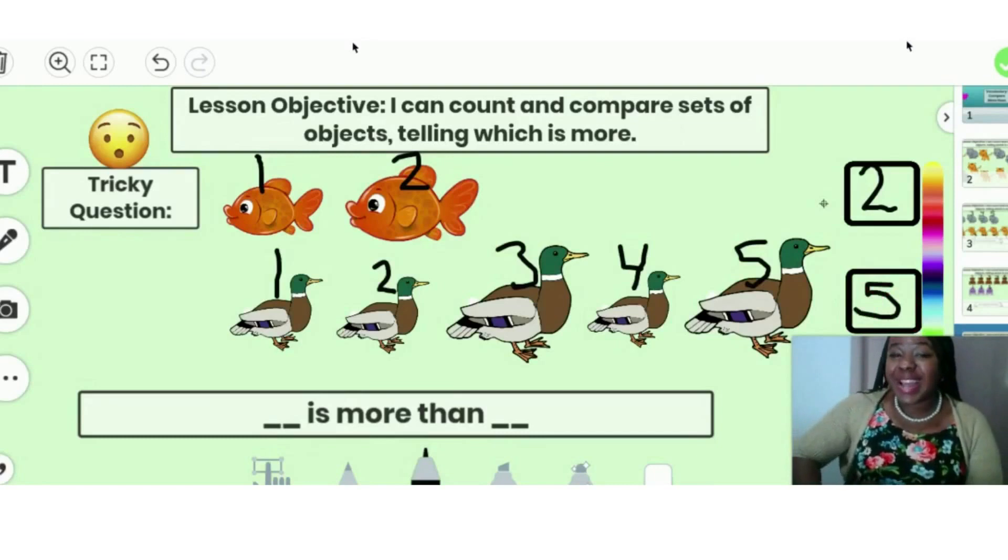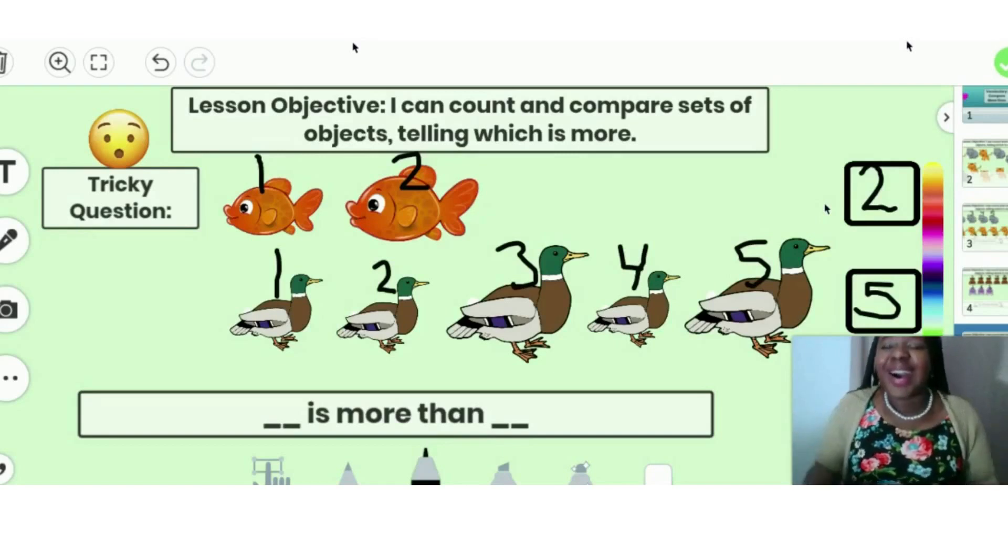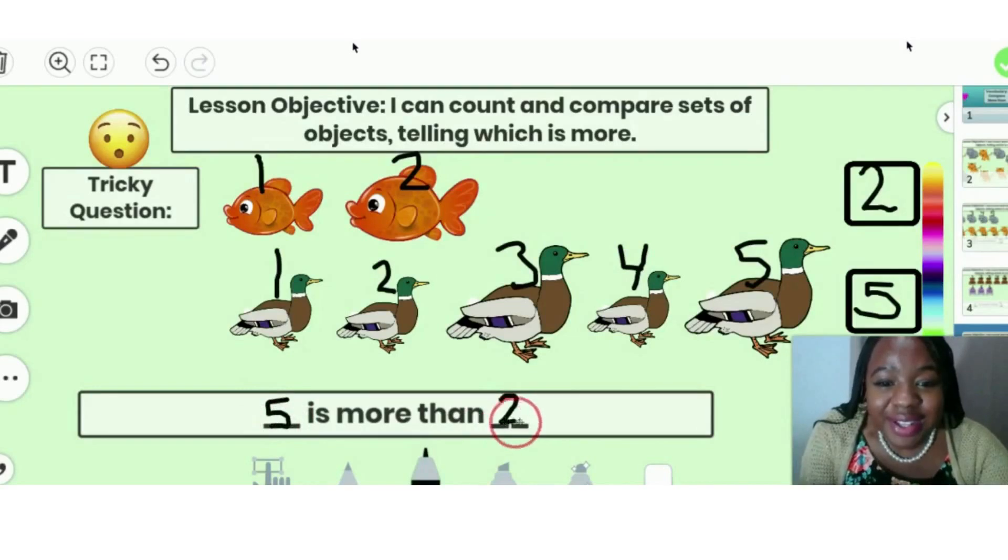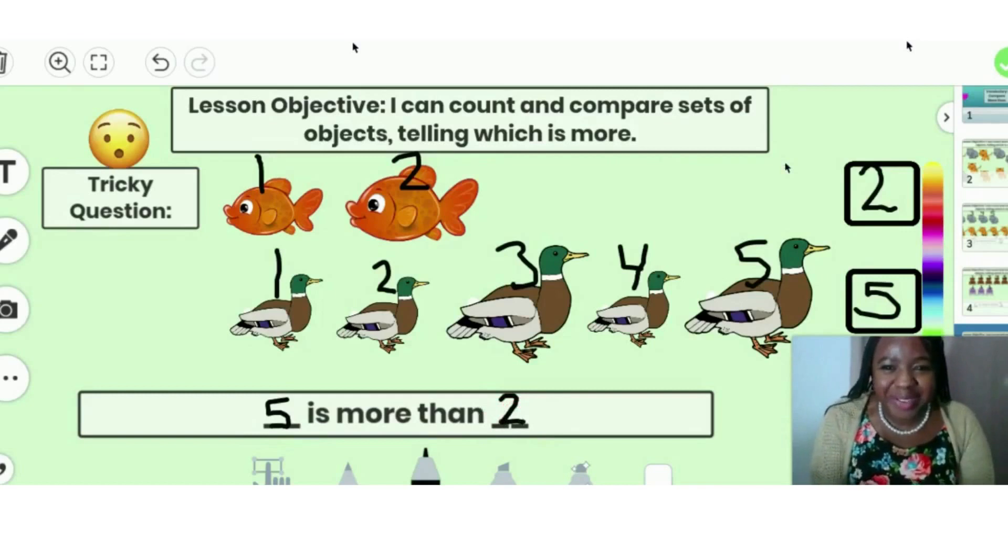Now what are we going to do next? We counted each object. Now what do we do? Oh, you know it. We have to compare to see which is more. Two or five? Five. Very good. Five is more than two. You did such a great job. I am so proud of you.